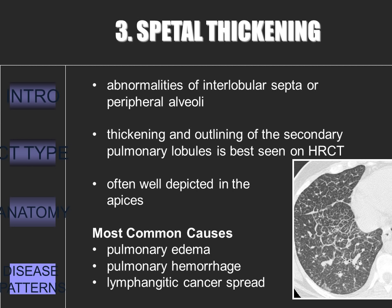The secondary pulmonary lobule is a fundamental unit of lung structure representing the lung in miniature — airways, pulmonary arteries, veins, lymphatics, and the lung interstitium are all represented. Perilobular pulmonary disease occurs close to interlobule septa and the periphery of lobules. Septal thickening reflects perilobular pulmonary disease — abnormalities of the interlobule septa or peripheral alveoli. The interlobular septa are well developed in the lung apices, and septal thickening is often well depicted in this region. The most common causes of septal thickening are listed here.